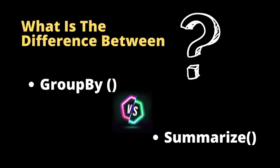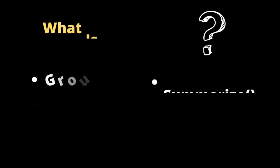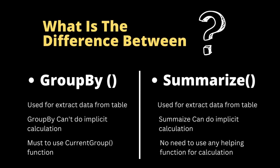The next question is: what is the difference between GROUPBY and SUMMARIZE DAX functions in Power BI? Both are used to extract data from a table, but the difference is that GROUPBY cannot do implicit calculations on its own — that's where the CURRENTGROUP function is needed. When using GROUPBY for implicit calculations, you must add CURRENTGROUP inside the GROUPBY function. SUMMARIZE, on the other hand, can do implicit calculations without any additional helper function.